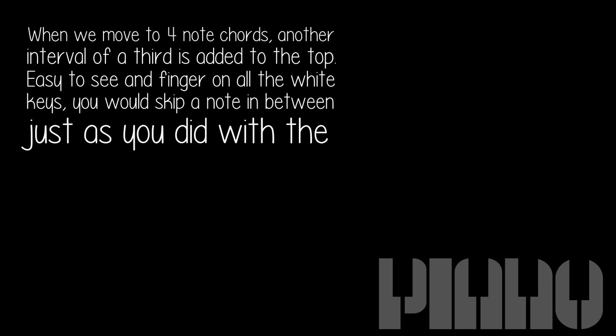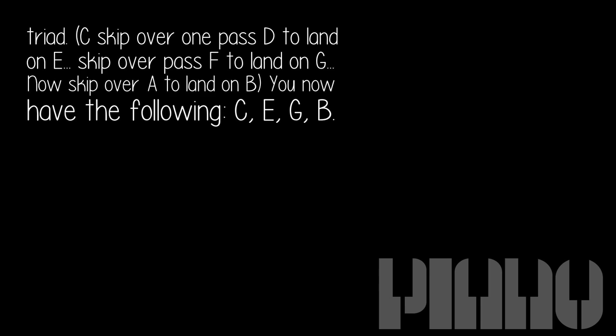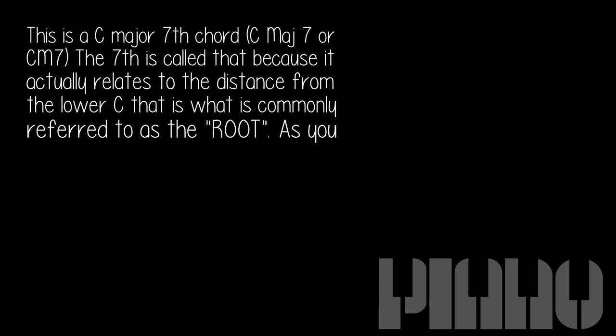When we move to four-note chords, another interval of a third is added to the top. Easy to see and finger on all the white keys — you skip a note in between just as you did with the triad. C, skip past D to land on E; skip past F to land on G; skip past A to land on B. We now have C, E, G, B — this is a C major 7th chord, or CM7.